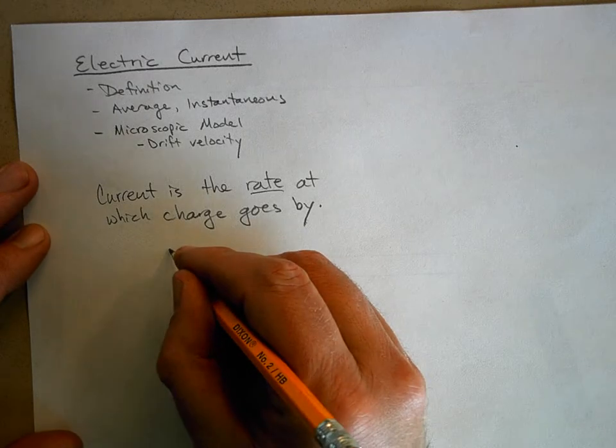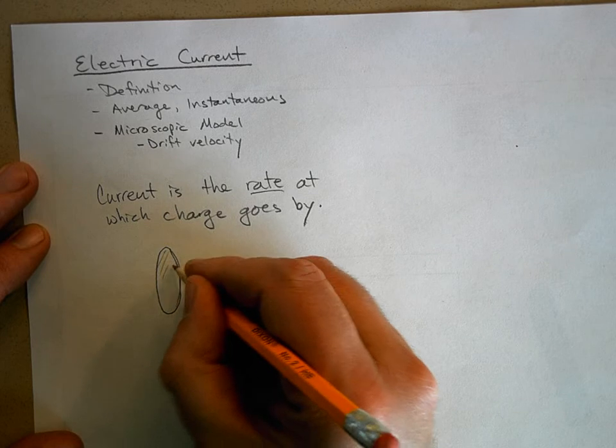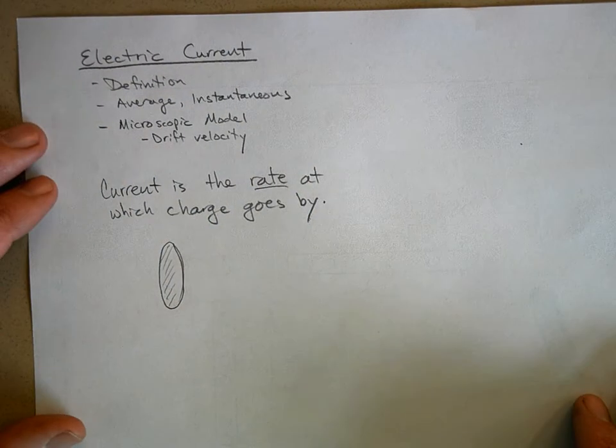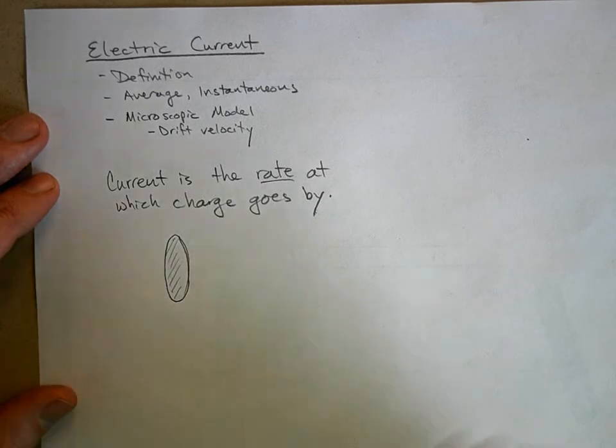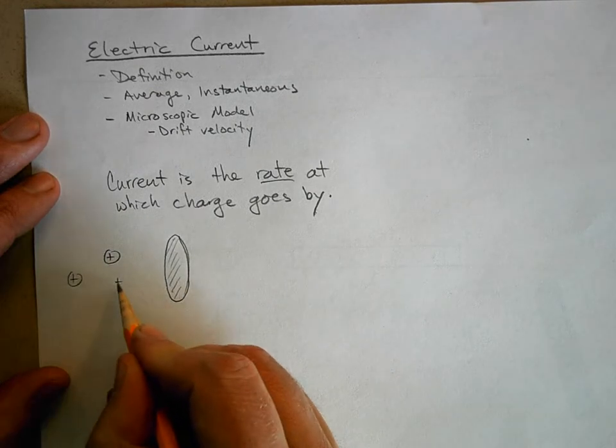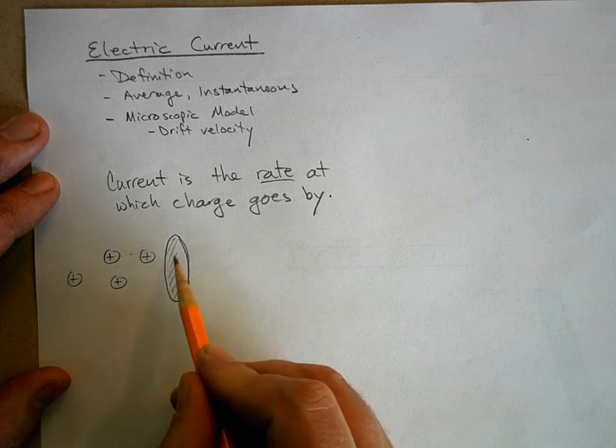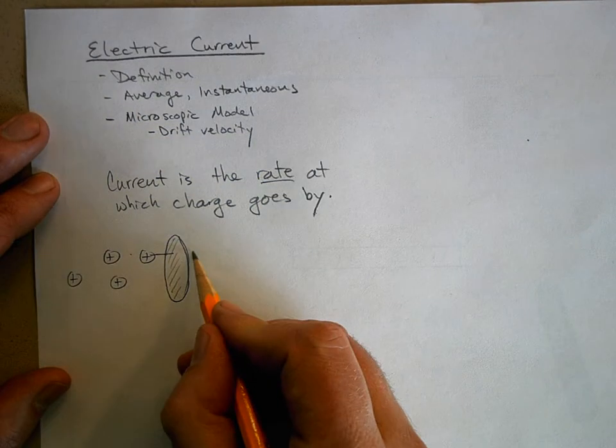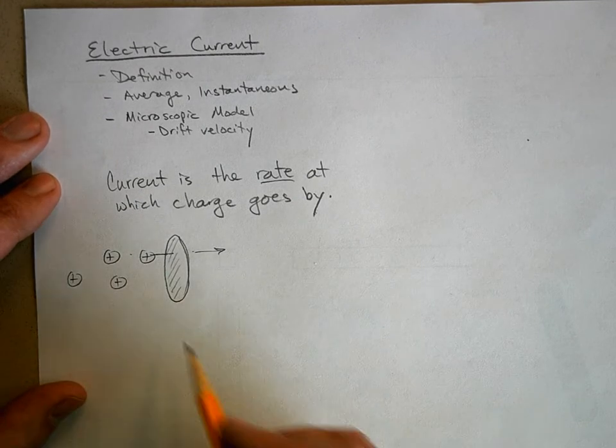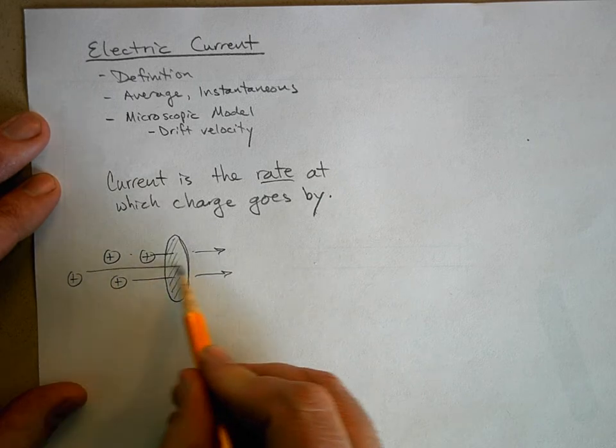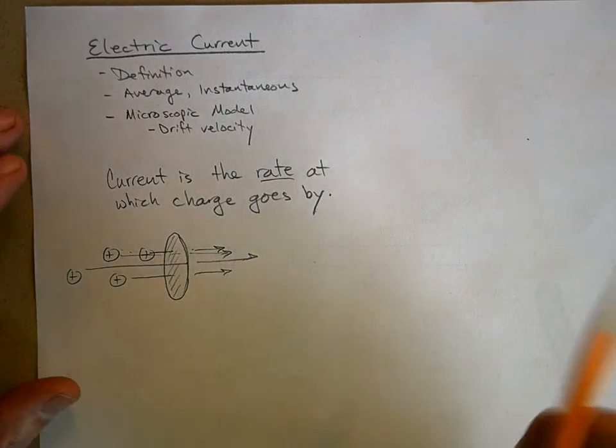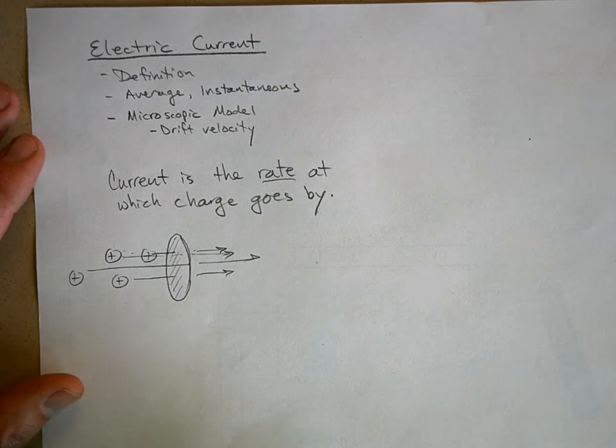If you have some cross-sectional area, like a portal – I should get some colored pencils and then I could really have fun with this. Here is a charge, and here's another charge, and there's just a bunch of them flowing through this area. All these charges are flowing through this cross-sectional area, and so we say, okay, in one second, how much charge will flow through that area? This will have some area A.